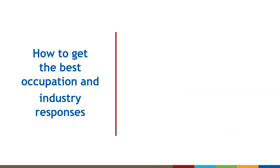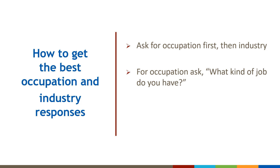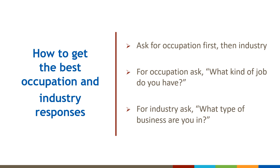To get the best occupation and industry responses, it's better to ask what the person's occupation is first, and then ask about their industry. This is because more people are familiar with their job title and are more easily confused about their industry. A good prompt for collecting occupation is: 'What kind of job do you have?' or 'What is your job title?' To gather the person's industry, ask: 'What type of business are you in?' or 'What does your company make or do?'